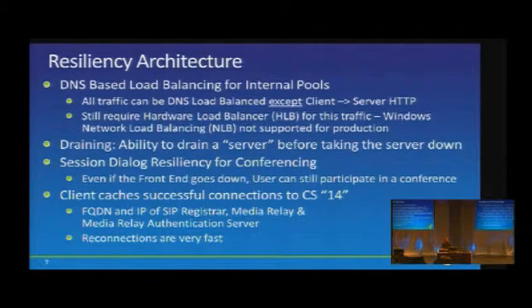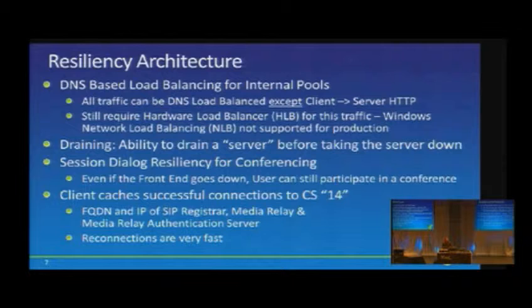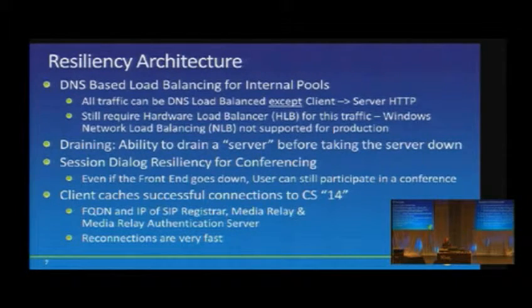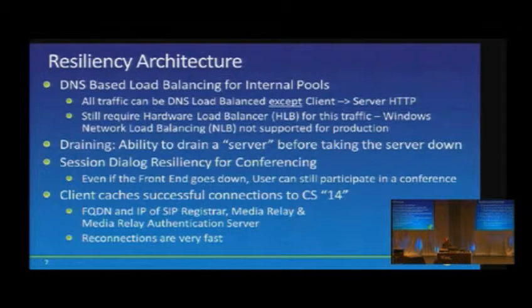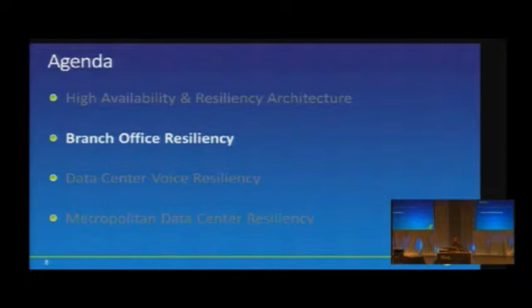We're also caching the client connections to CS14 — specifically the FQDN and IP address. In many organizations, Active Directory or DNS may have an outage. By caching the IP address locally, we remove some dependencies on Active Directory and DNS so that client services and communications can be maintained even during a DNS or Active Directory outage. This brings additional resiliency into the CS14 architecture. Reconnections are also very fast — we did many optimizations in the media stack to ensure media resumes as rapidly as possible once the network connection is restored.